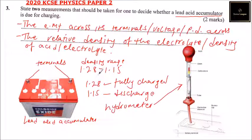That is just extra information. What you need to measure is: first, the EMF across its terminals, or voltage or potential difference across the terminals. The other one is the relative density of the electrolyte, or density of the acid. That is up to there. You'll be able to get two marks. But it is important also to understand where we are deriving these answers. So that's how you answer question number three.